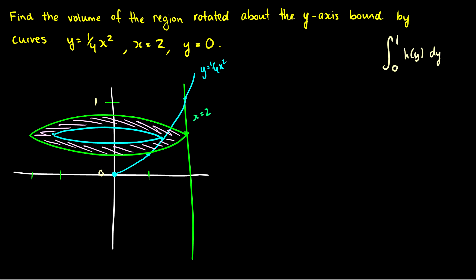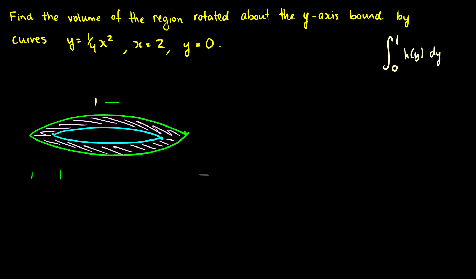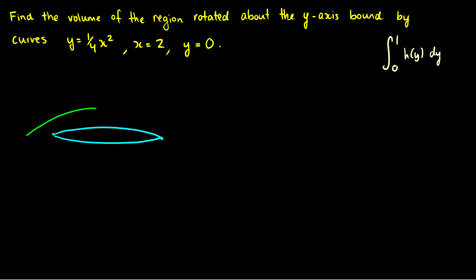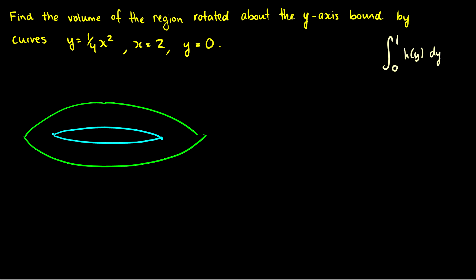How do we get the formula? We need to express the radii as functions of y. From y = (1/4)x², we get 4y = x², so x = 2√y. The inner circle has radius 2√y, and the outer circle is always x = 2, so the outer radius is just 2.